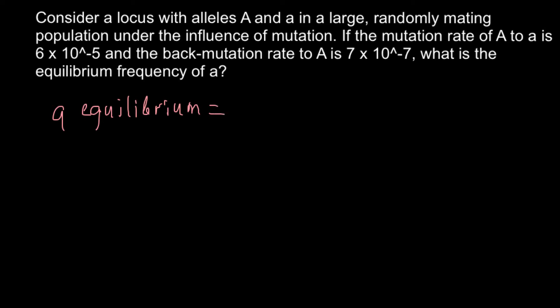would equal U divided by U plus V, where U stands for the rate of the forward mutation and V stands for the rate of the backward mutation.